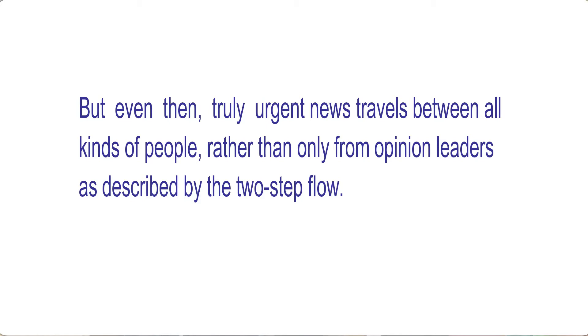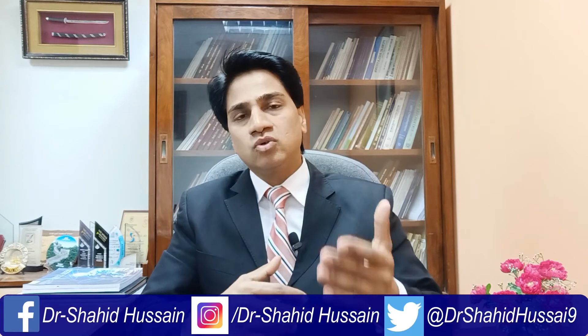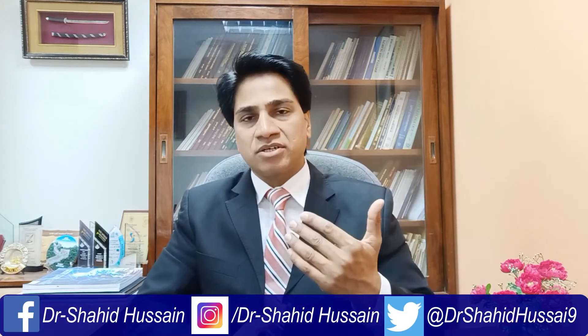Truly urgent news travels between all kinds of people rather than only from opinion leaders as described by the two-step flow model. Similarly, individual differences and social categories shape people's interest in the news item and the social networks from which they get information. Social networks, plus individual differences, also play an important role in the dissemination of news, in the diffusion of news, and in news seeking patterns.